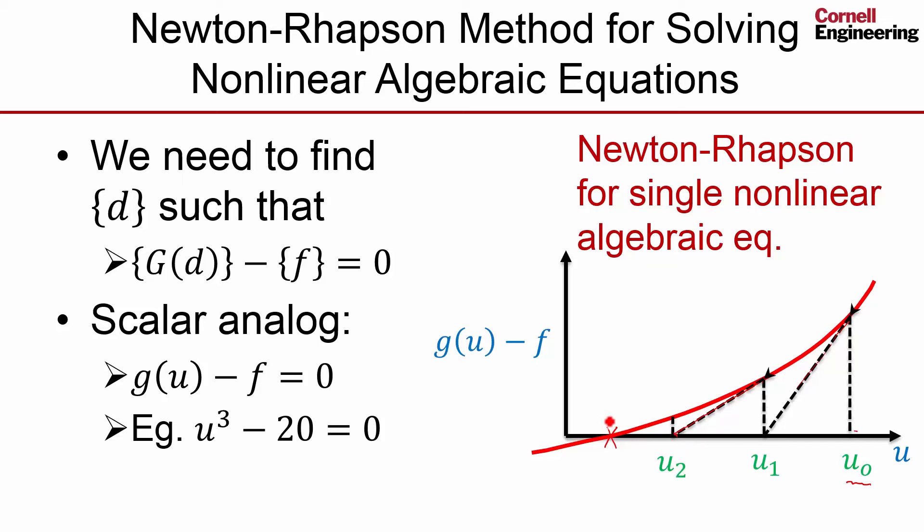Now, the complication is that in reality, you don't have these nice smooth curves. In fact, for contact, when it comes into contact, suddenly you've gone from zero to a finite traction. So you have a nonlinear curve, and there is no assurance that you are going to get, it's going to converge to the actual solution. And of course, this is for a scalar equation.